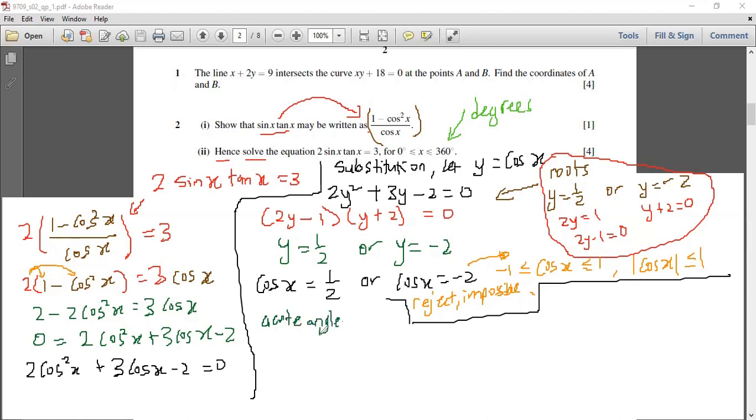So now we have cos x is half. So we must use the special angle property or just take the calculator, hit arc cos of half. You should get x is 60 degrees. So that 60 degrees is called the acute angle. So the acute angle, in other words, if you want to write a working, it's not necessary. Just for learning, arc cos, arc cos is cos negative one of half, the old way of saying it. So you get 60 degrees.